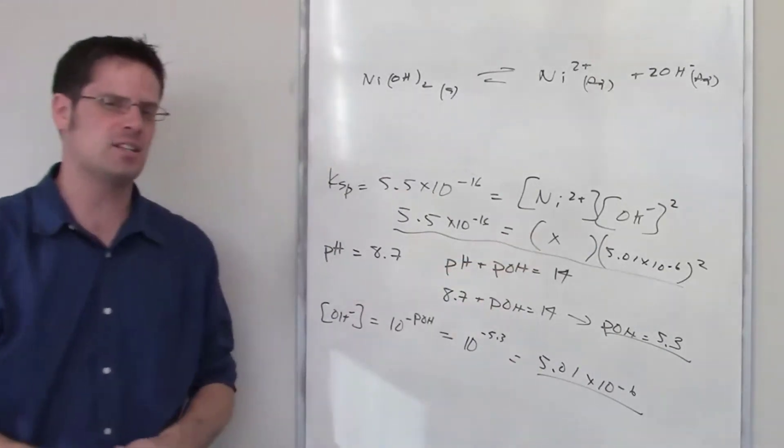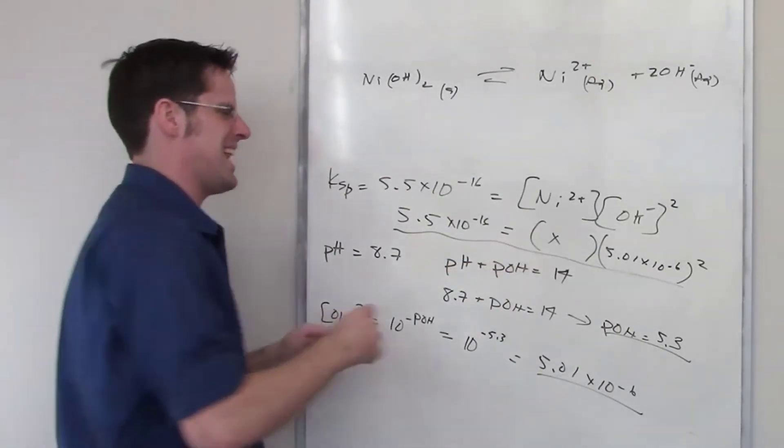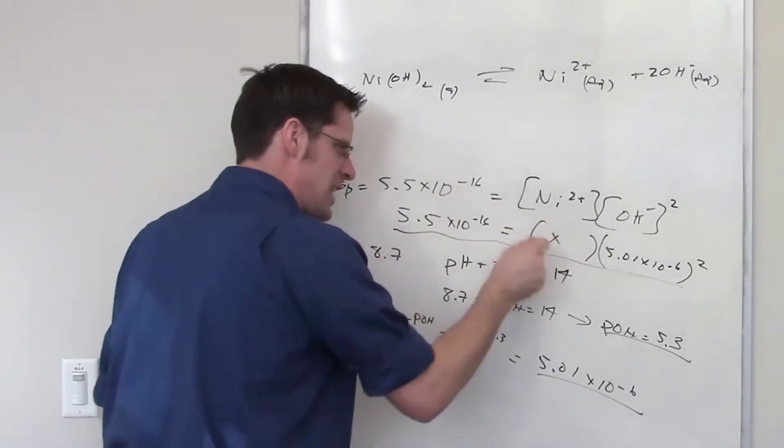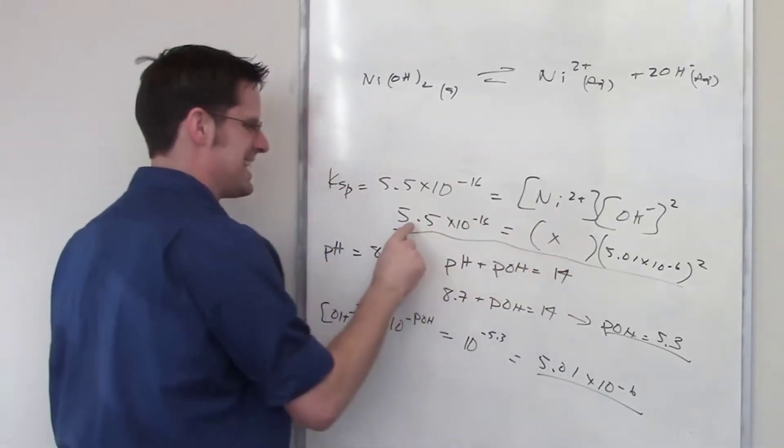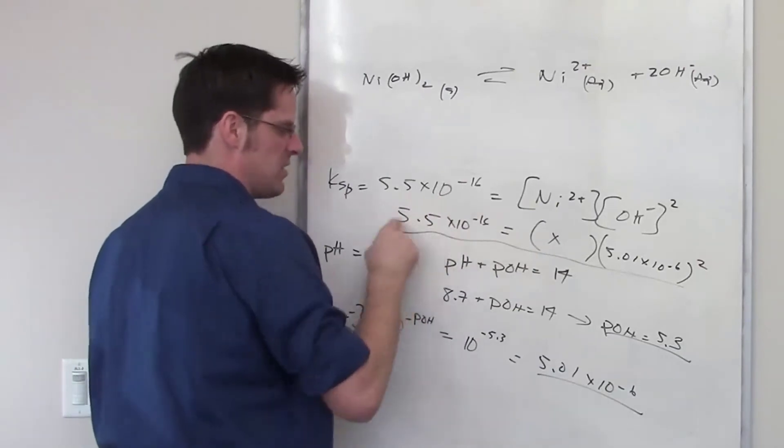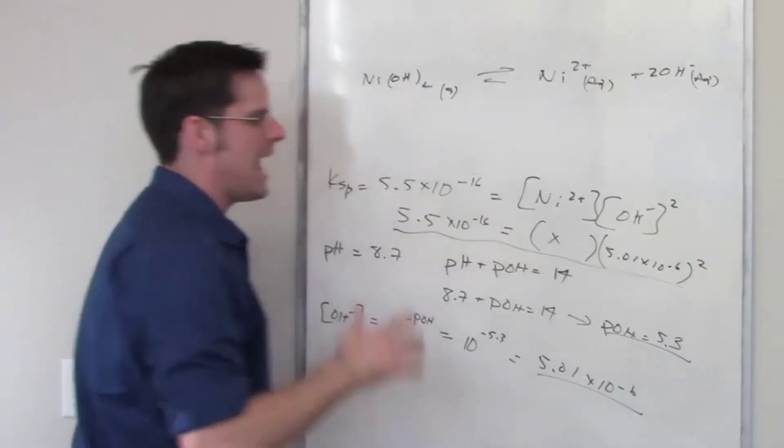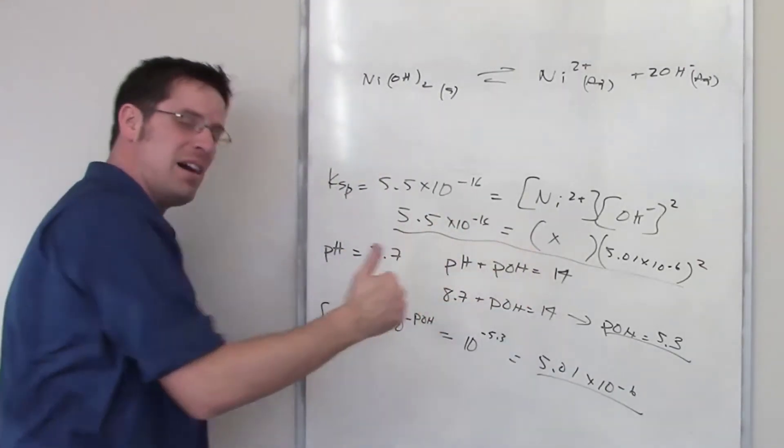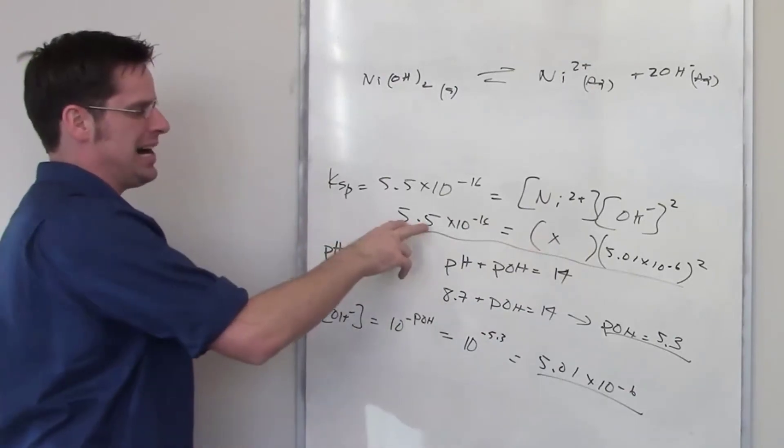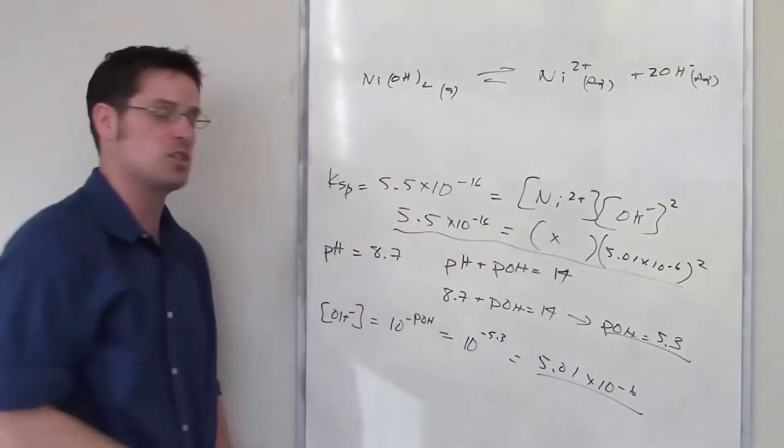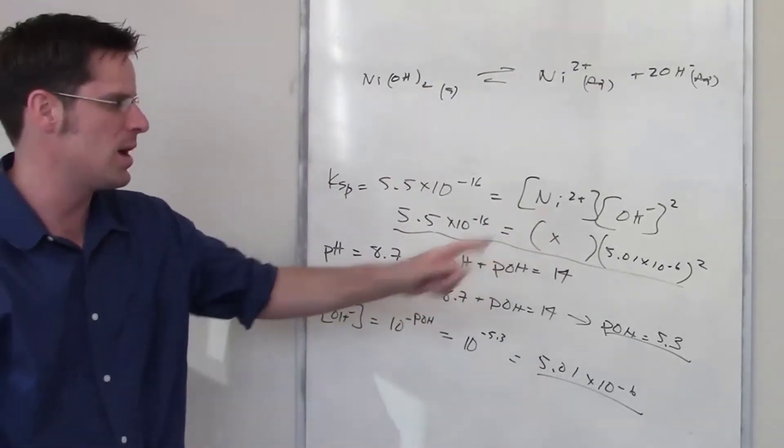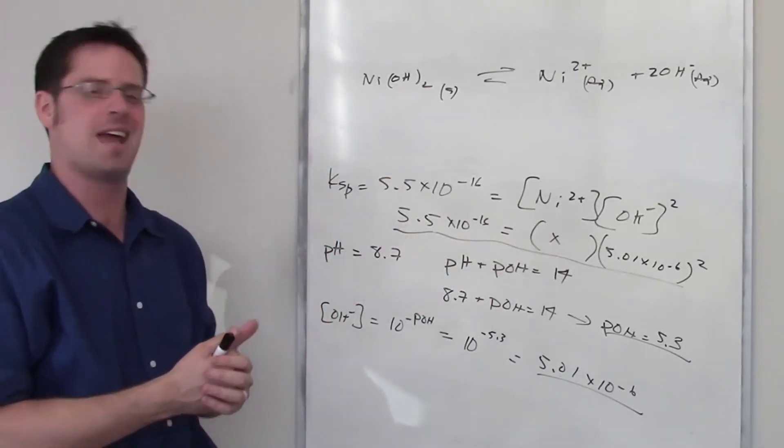If you solve for X here, what that tells you is that whatever X comes out to be is the exact concentration of nickel 2 plus you need to get at this pH in order to get exactly the value of Ksp. Any amount of nickel 2 plus that's above that number will be too high and you'll cause precipitation of nickel hydroxide. So solve for X and just say any number above that number X is going to cause precipitation at this pH.